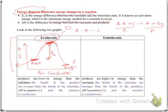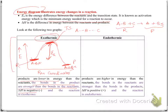For the exothermic reaction graph, products are lower in energy than reactants. Lower energy compounds are more stable, so the bonds in the products are stronger than the bonds in the reactants. Delta H is negative. Delta H is calculated as the energy of products minus the energy of reactants — since products are lower in energy, the difference is negative, confirming the reaction is exothermic.